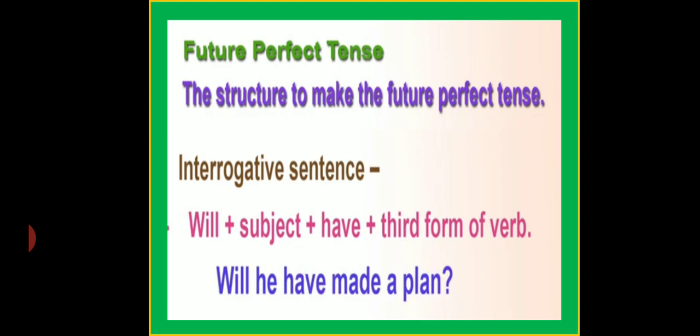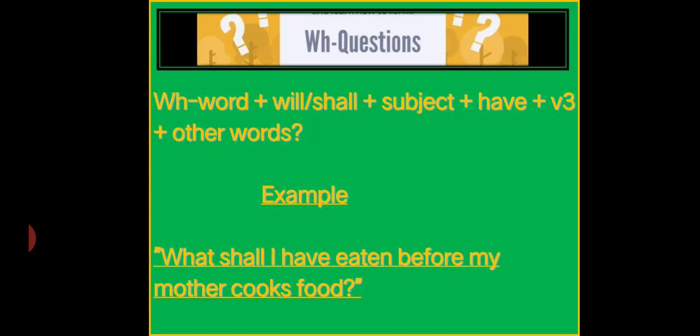In interrogative sentences, will or shall comes first, then subject, then have, then verb's third form. For example: will he have made a plan? Next are WH questions — what, whom, where, when. The structure is: WH word plus will or shall plus subject plus have plus verb third form plus other words with interrogative sign. For example: what shall I have eaten before my mother cooks food?